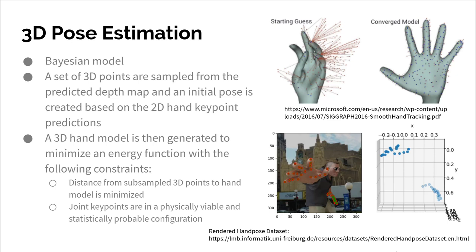A 3D pose estimation is then accomplished via a Bayesian model. A set of 3D points are sampled from the predicted depth map, as well as an initial pose is created based on the 2D hand key point predictions. A 3D hand model is then iteratively generated by minimizing an energy function with the following constraints: the distance from the subsampled 3D points to the hand model surface is minimized, and the joint key points are in a physically viable and statistically probable configuration for a hand. In the top right, you can see how this iterative model will converge to a particular hand pose, and in the bottom right, you can see some predicted values for 3D hand pose estimation.